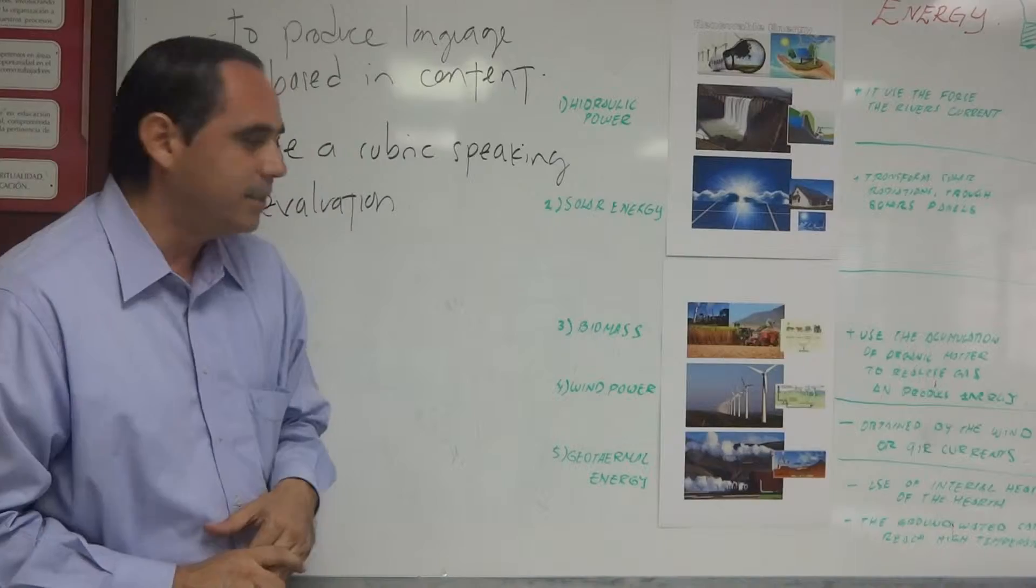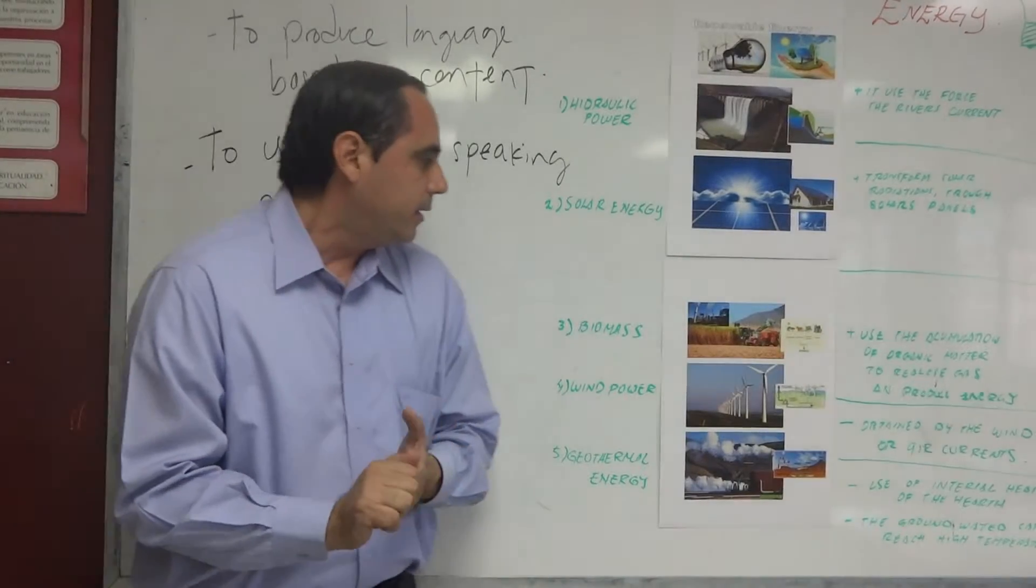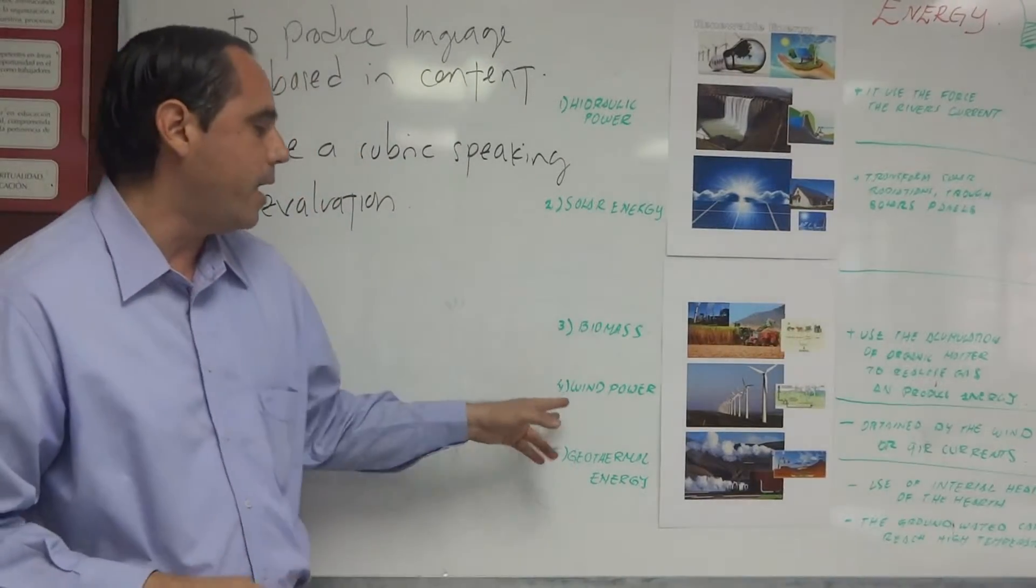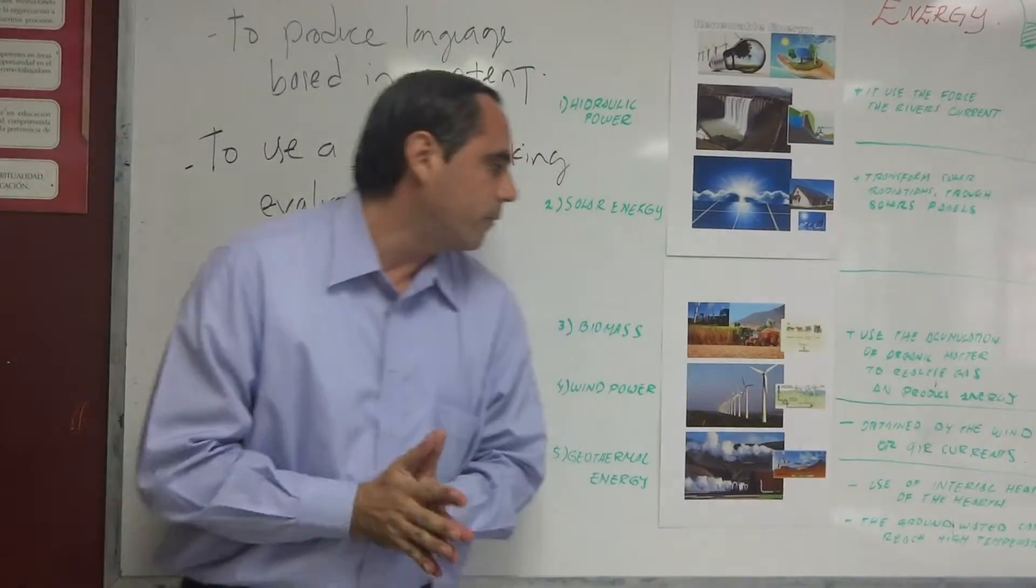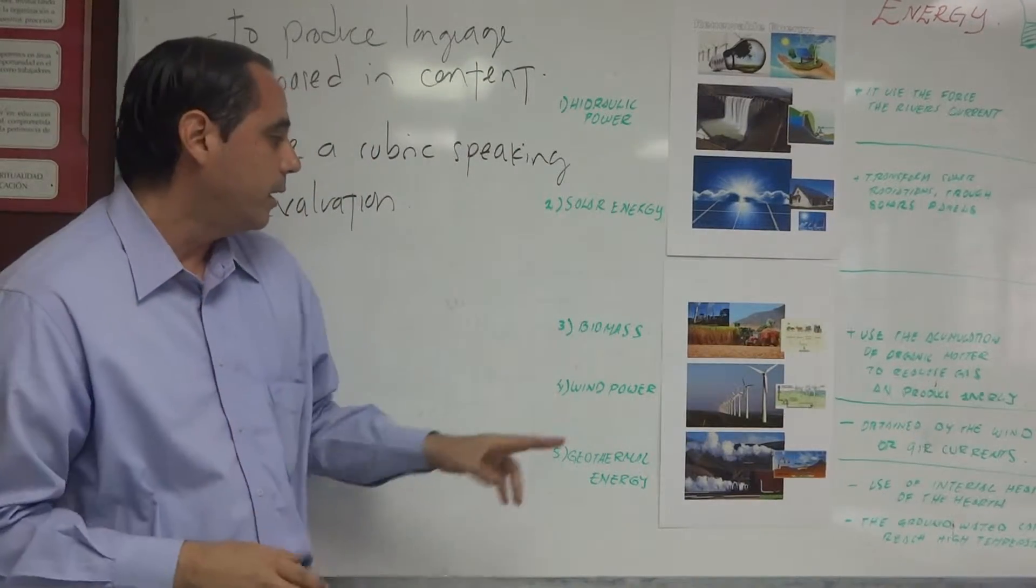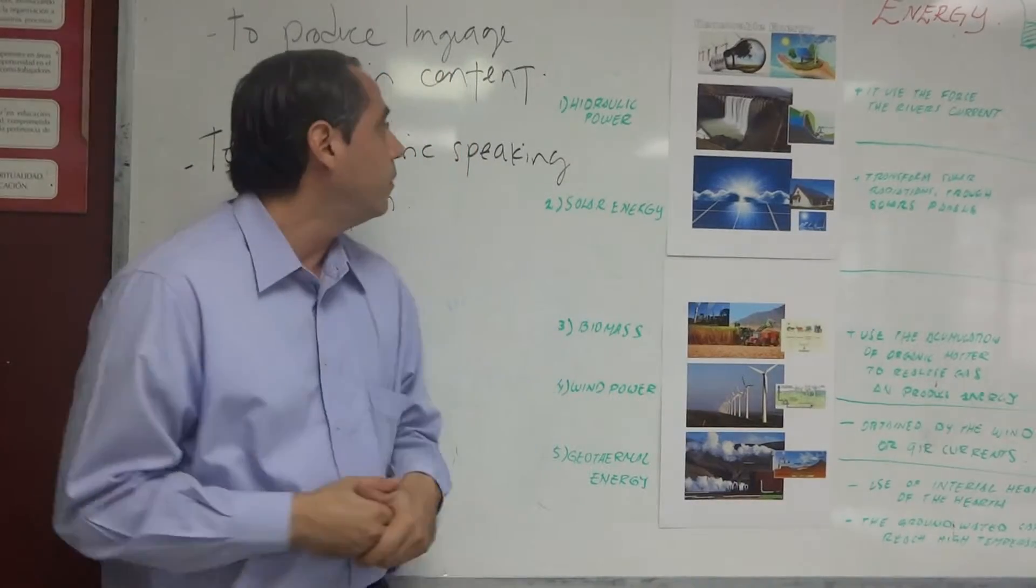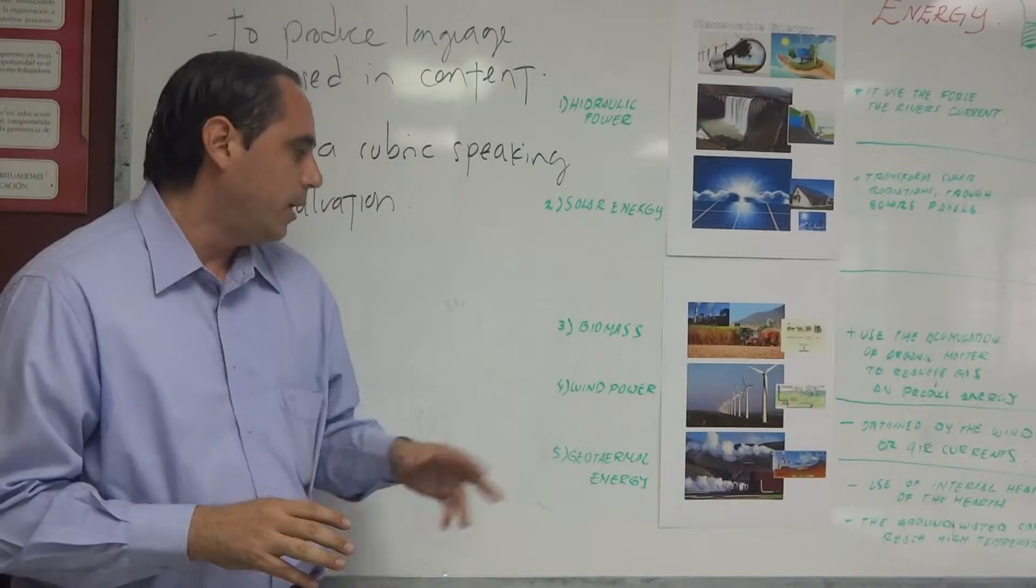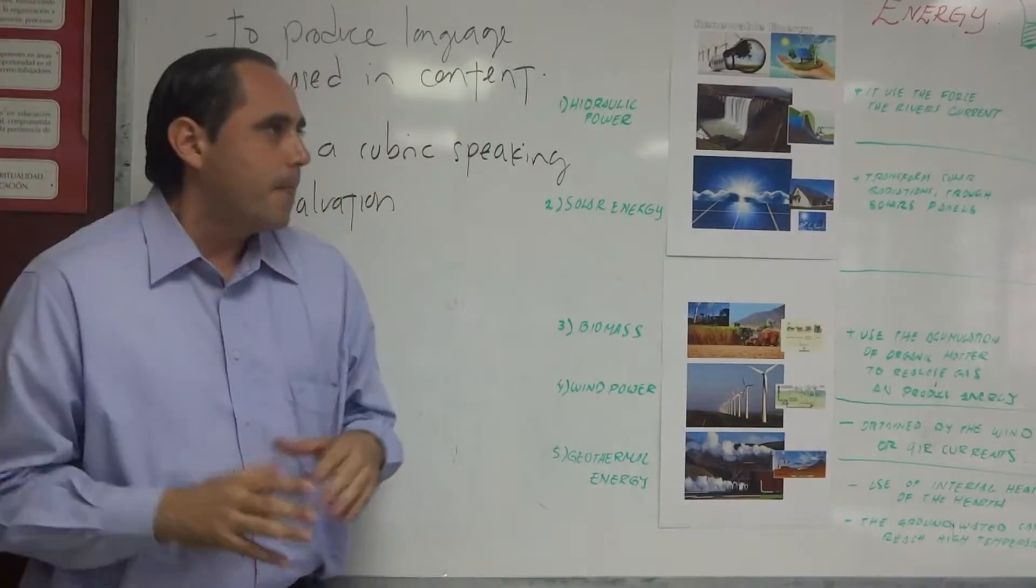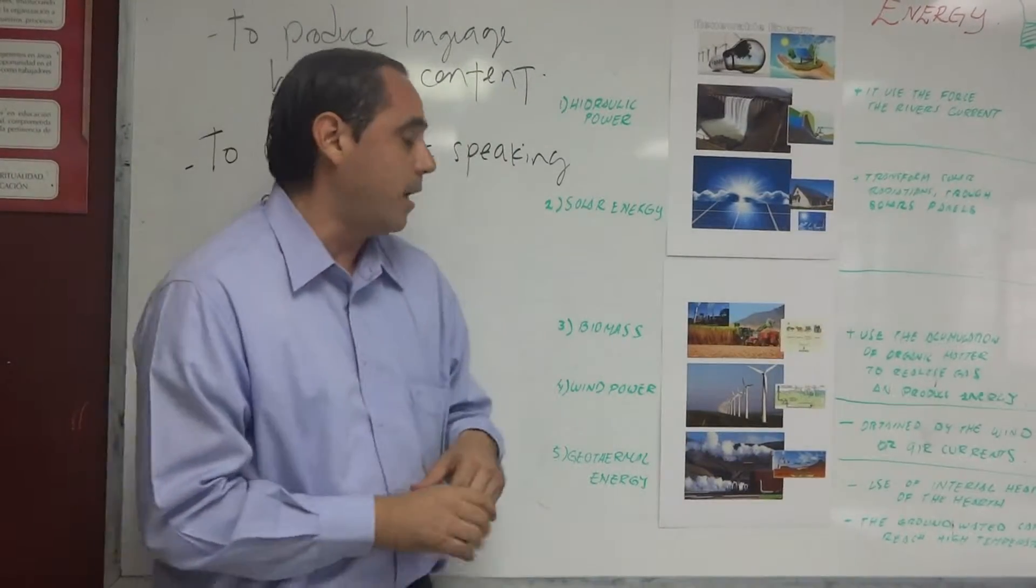The fourth option is wind power. In this case, the energy is obtained by wind power to produce electrical current. This type of renewable energy is not more common in our country, but it has very easy installation.